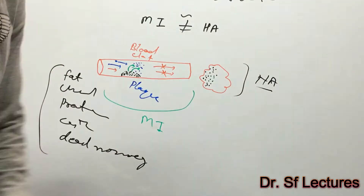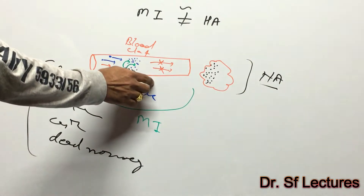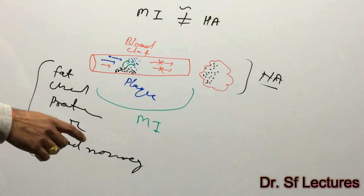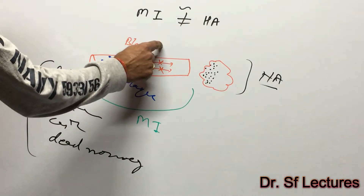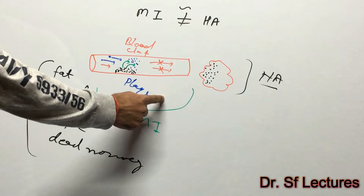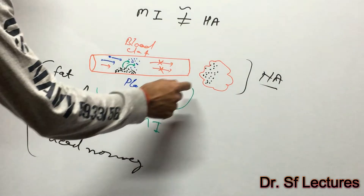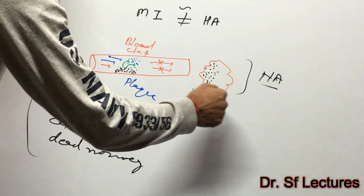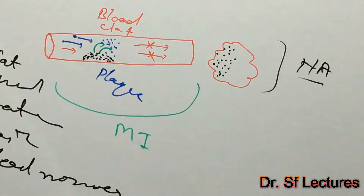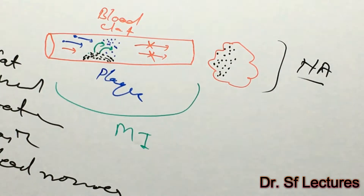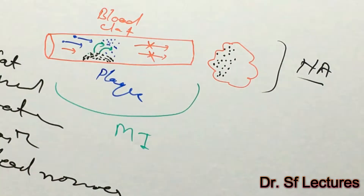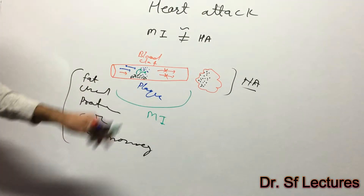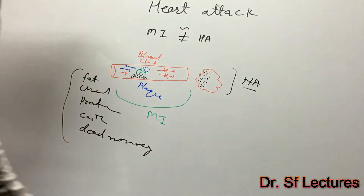In other words, when a coronary artery becomes blocked — usually by a blood clot or plaque formation — an area of heart tissue and heart muscles loses its blood supply. This reduction of blood supply can quickly damage or kill the heart tissue, and that death of heart tissue is called a heart attack. So myocardial infarction is the process, and heart attack is the resulting tissue death.